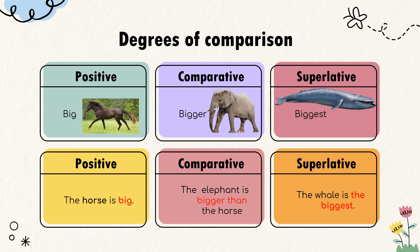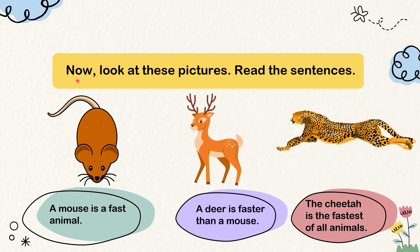A positive adjective stands alone. A superlative adjective is used to compare three or more nouns — we usually add EST to the adjective. For example, the whale is the biggest. A mouse is a fast animal; a deer is faster than a mouse; the cheetah is the fastest of all animals.